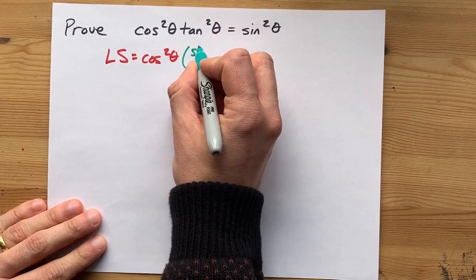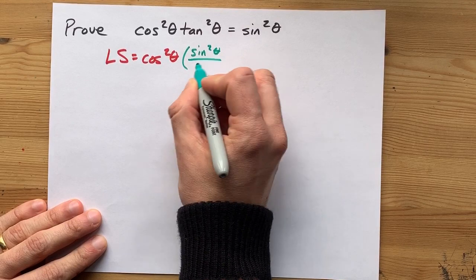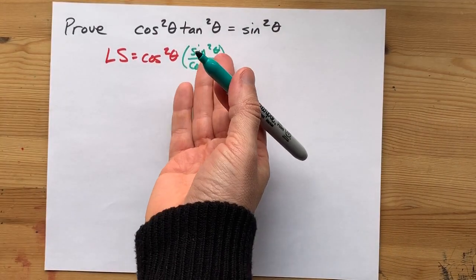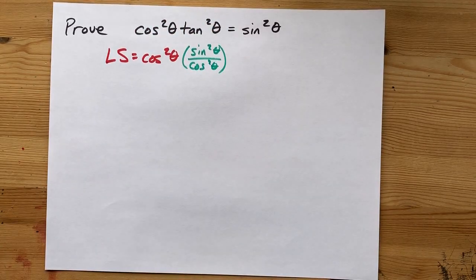Tan squared is the same as sine squared over cos squared. Technically, the quotient identity, we've just applied a squared to it instead.